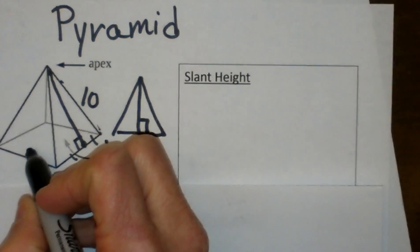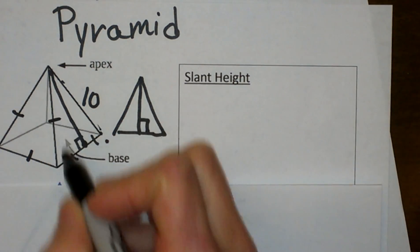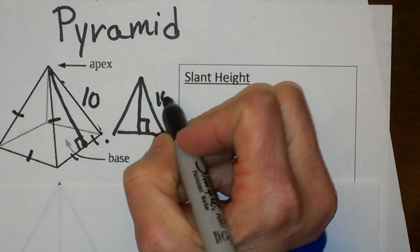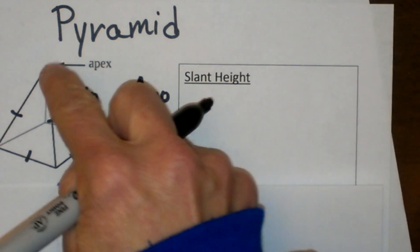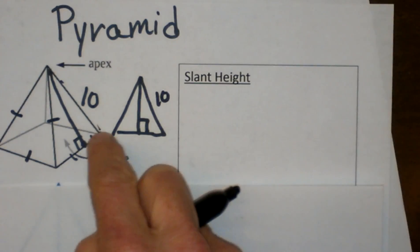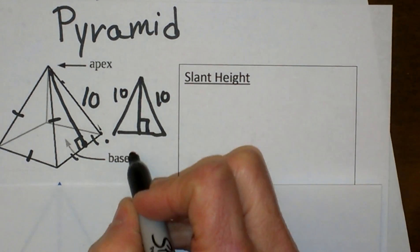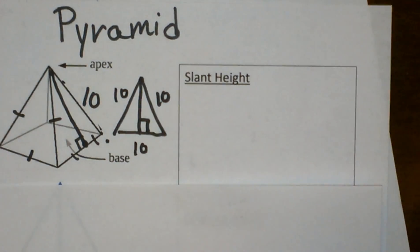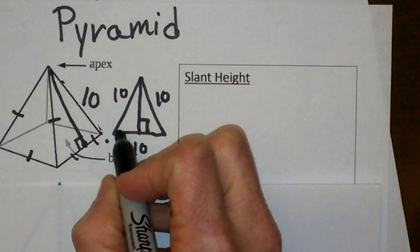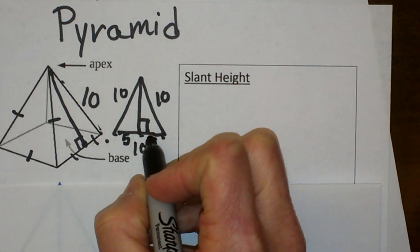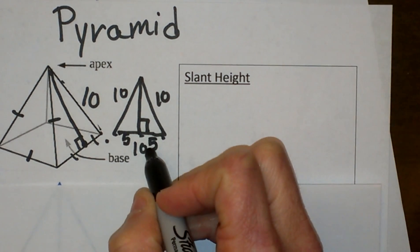And we are going to assume that this is an equilateral face. Then I can label this side 10 because that is the edge of my face. Well if it is equilateral I know that all three sides are 10. That makes this piece 5 and this piece of the base 5 because it cuts it in half.